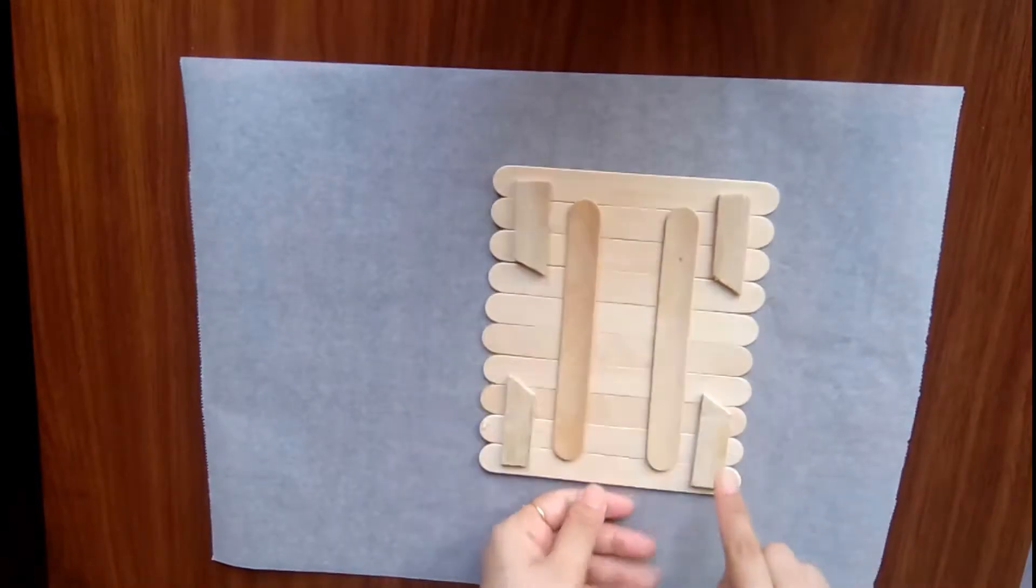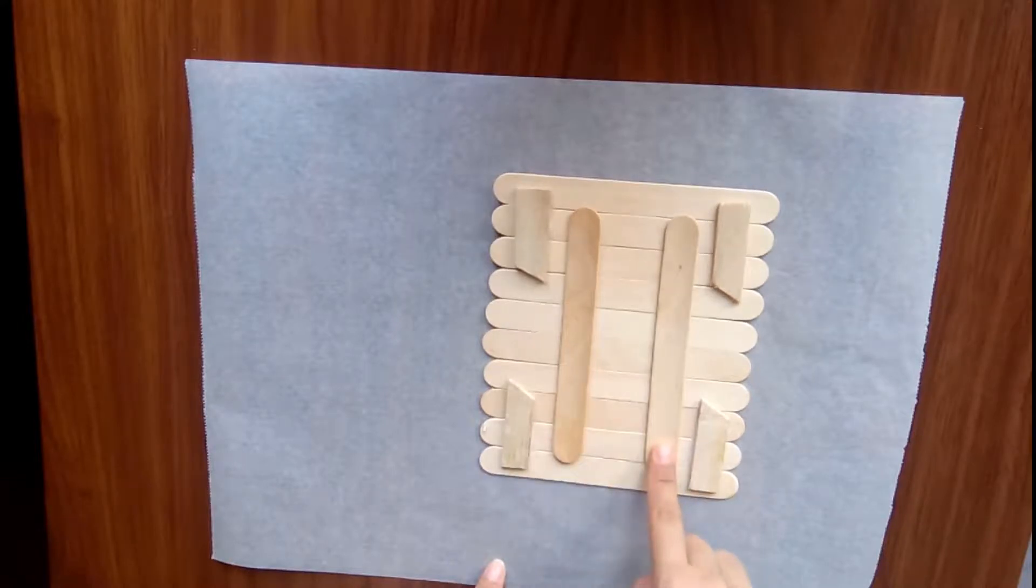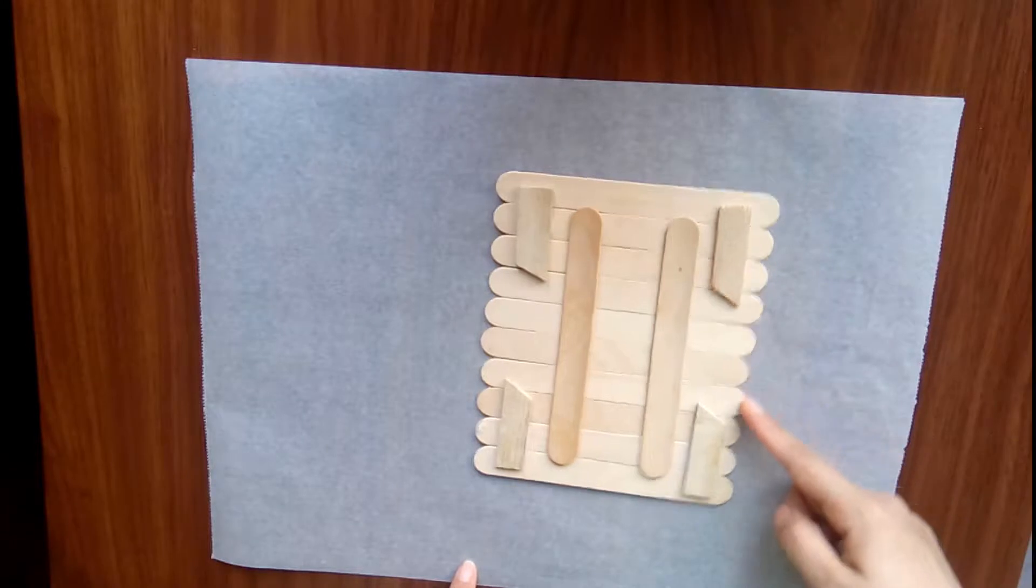As you can see, I have glued 10 popsicle sticks to make a canvas. At the back side, I have glued four smaller sticks at the corners and two larger ones almost at the middle of the canvas in order to make it firm.